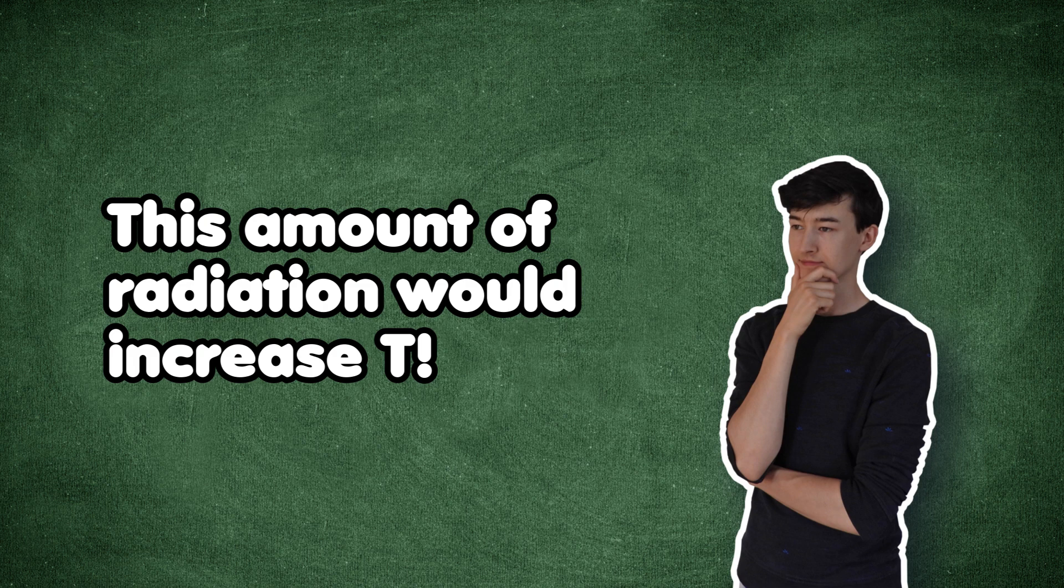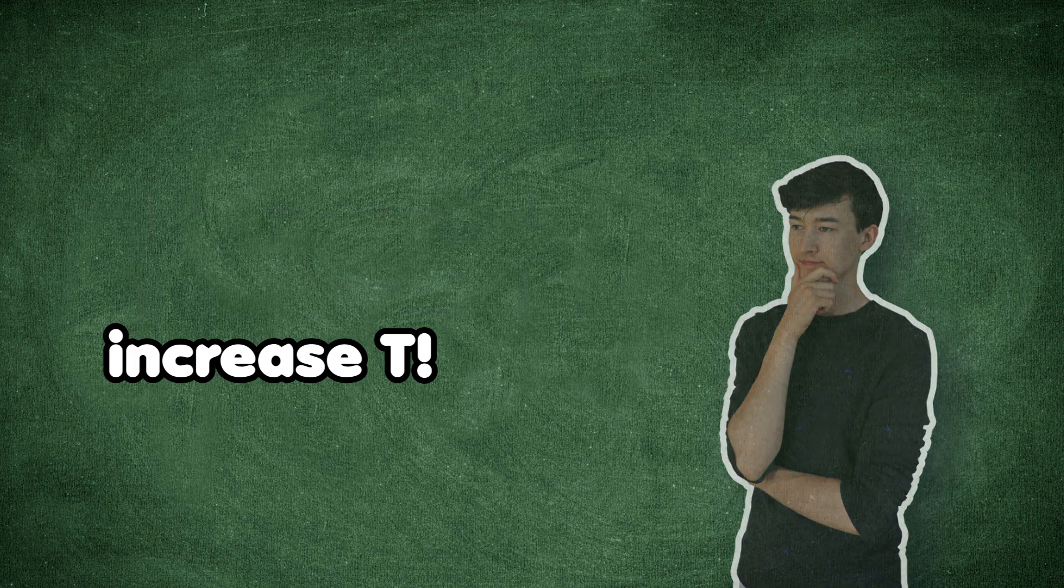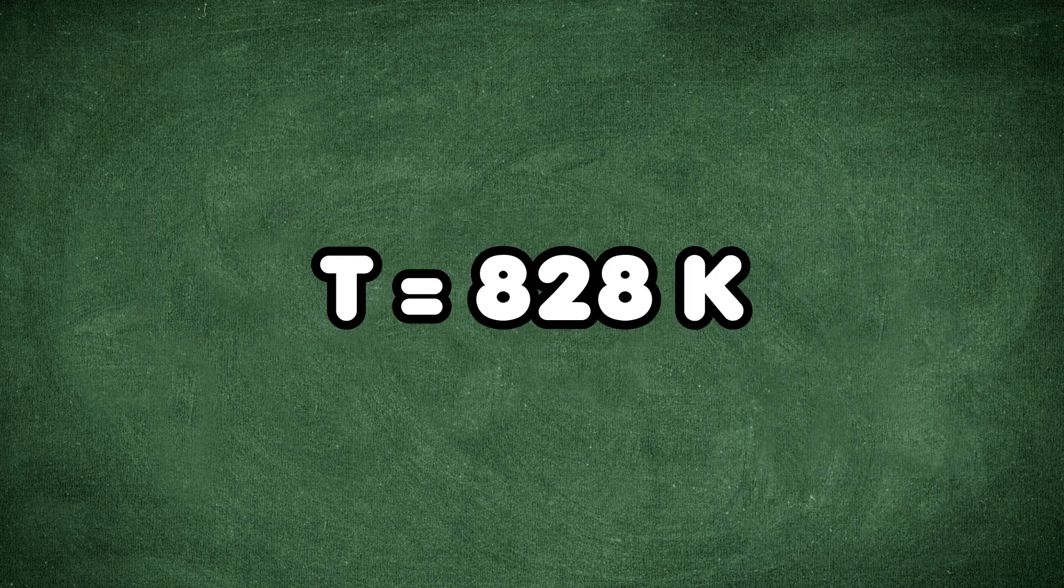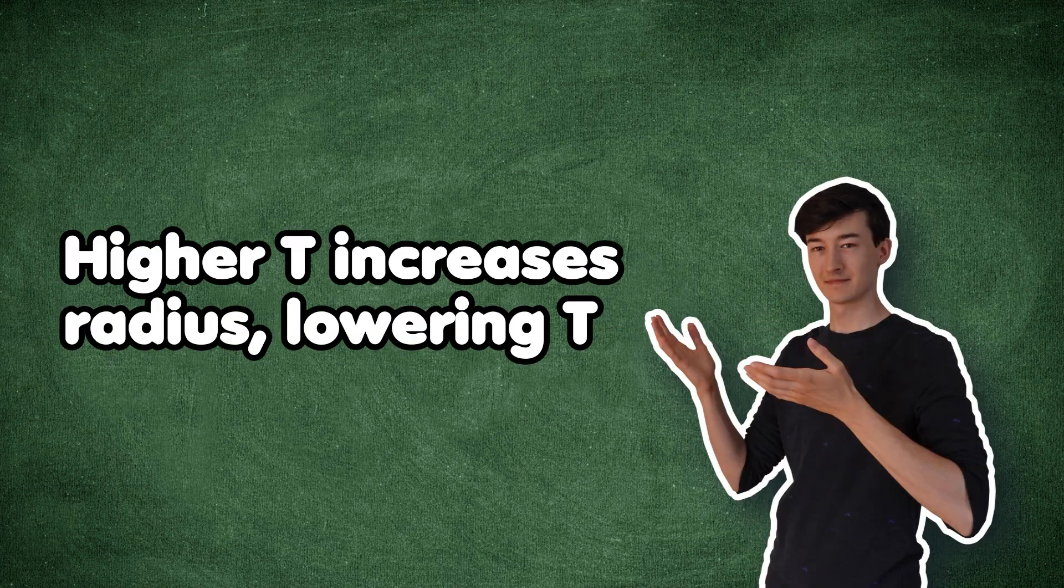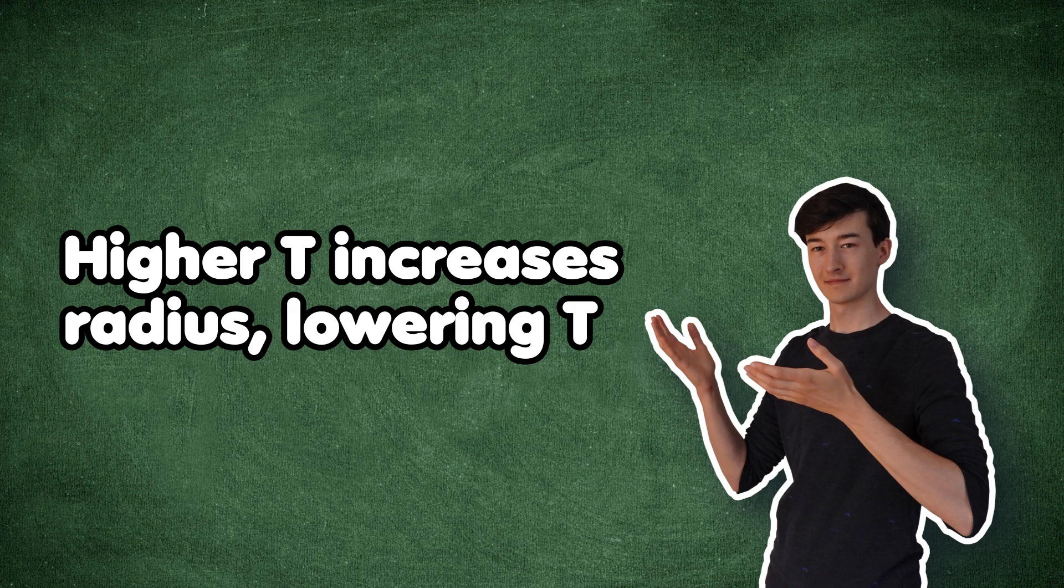And I also mentioned that Joule should heat up due to all of this. And if we calculate that, we get a surface temperature of 828 kelvin, assuming the same radius. But this increase in temperature would result in a puffier planet, thus increasing the radius.